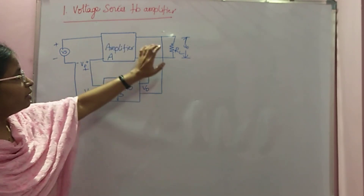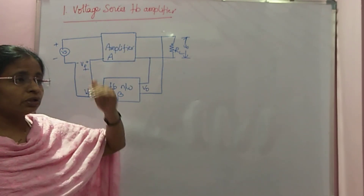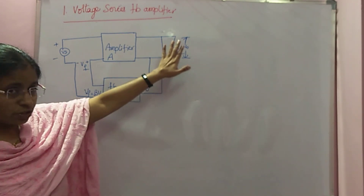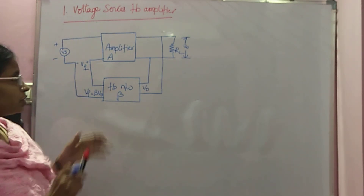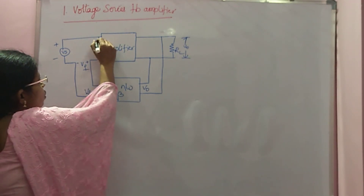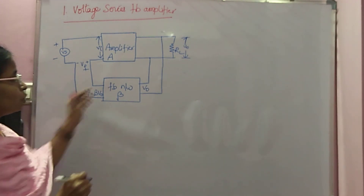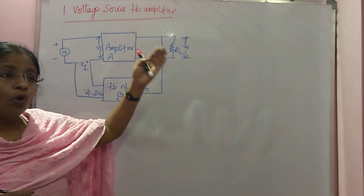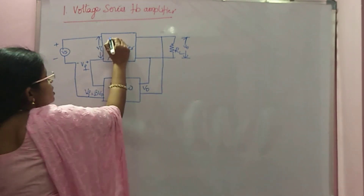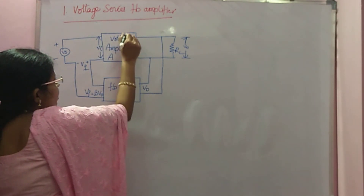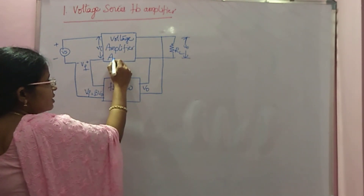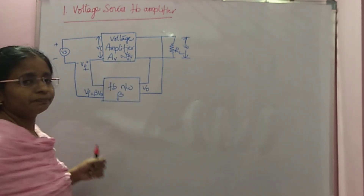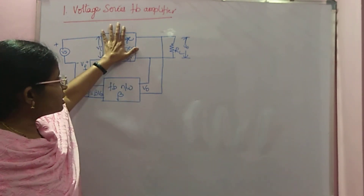This is your voltage series feedback amplifier. Now, what type of amplifier is it? A takes either of those four forms. The output is voltage and the input is also voltage — the actual input voltage for the amplifier is Vi. So output is V0 and input is Vi, making this a voltage amplifier.